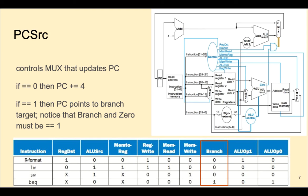PC source controls the multiplexer that updates the PC. If the instruction is not a branch, then branch equals zero, and the output of the AND gate will be zero, which means that the PC will be updated by 4 as usual.